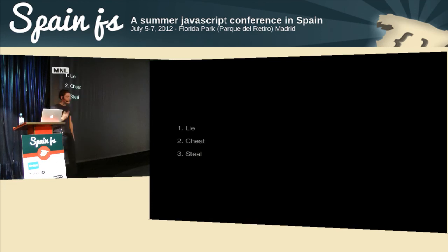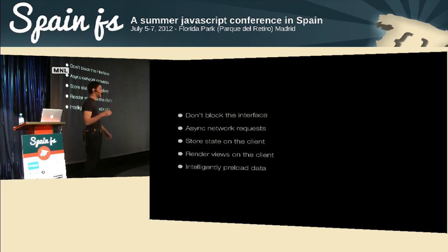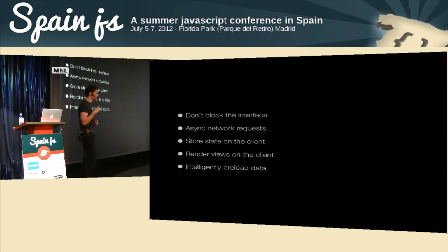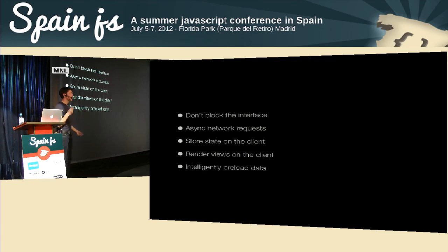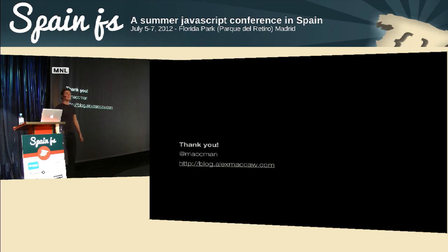So, quick recap: the idea behind asynchronous UIs is to lie, cheat, and steal. You lie to clients — the interface is updated before things are actually saved in the database. You cheat and steal — you intelligently preload data when the client isn't looking. You do all the rendering and state management on the client. Thank you very much.